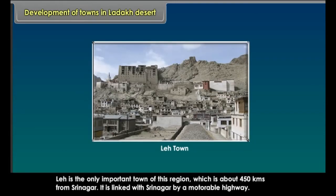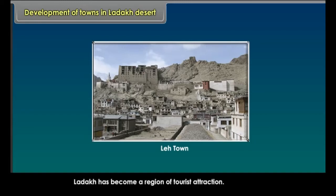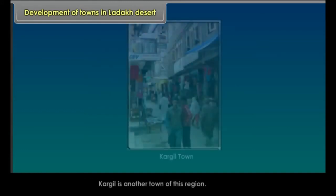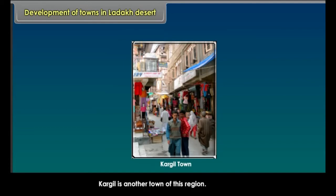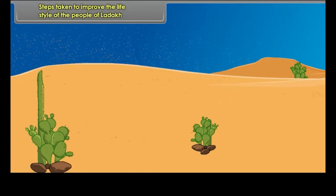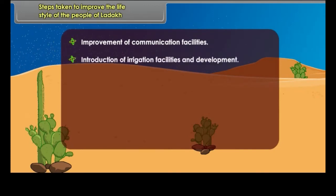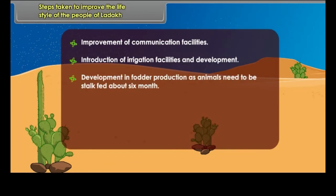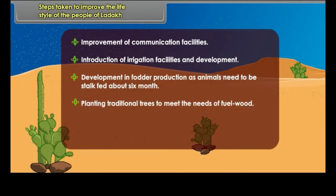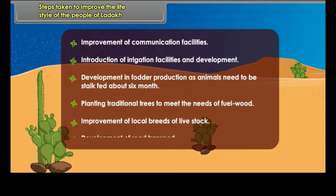Development of Towns in Ladakh Desert. Leh is the only important town of this region, about 450 kilometers from Srinagar, linked by a motorable highway. Ladakh has become a region of tourist attraction. Kargil is another town of this region. Steps taken to improve the lifestyle of the people of Ladakh include: improvement of communication facilities, introduction of irrigation facilities, development of fodder production as animals need to be stock-fed for about 6 months, planting traditional trees for fuel wood, improvement of local livestock breeds, and development of road transport.